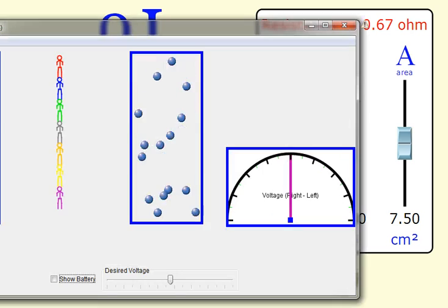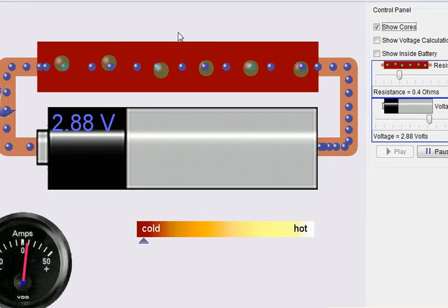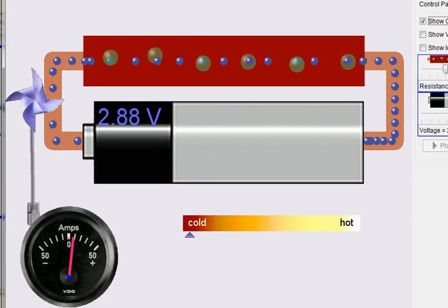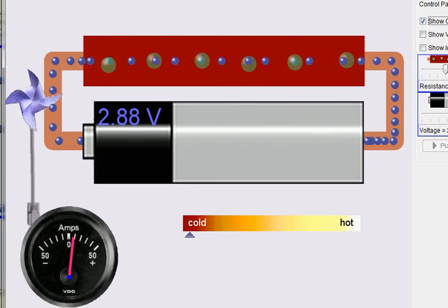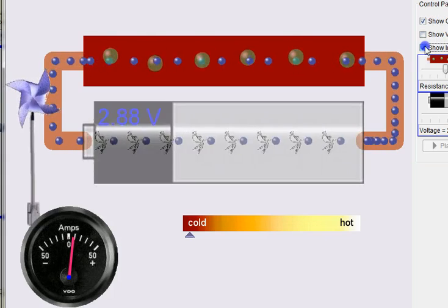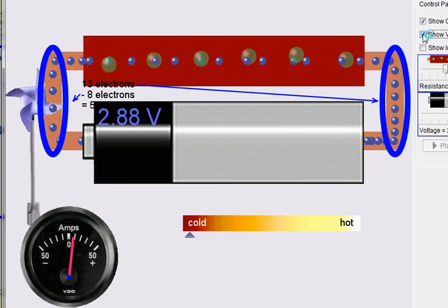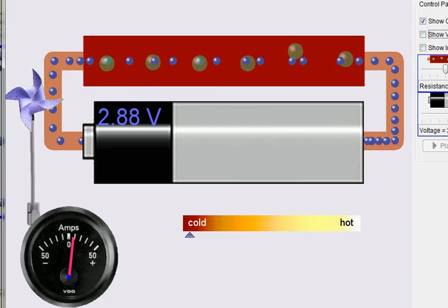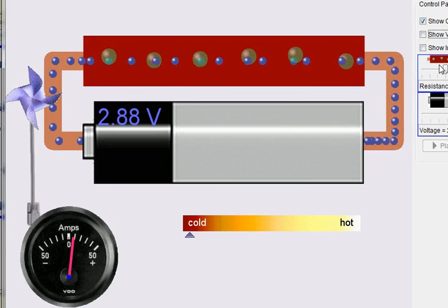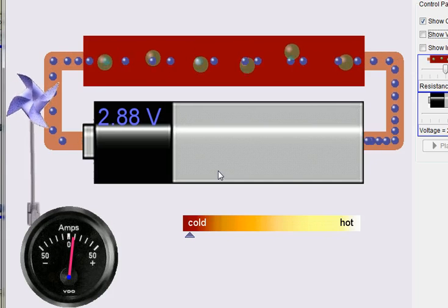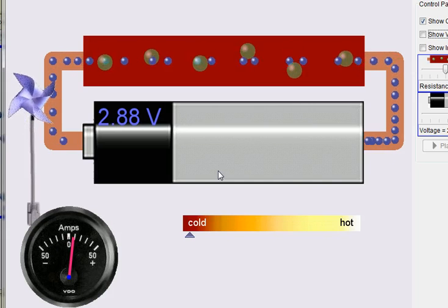And then finally, our third one is the battery resistor circuit. And you can try to describe what's going on in this. And you can look inside. You can show how voltage is calculated. And you can play with some slider bars here. So for each of these, I'd like you to write about a three to four sentence paragraph describing what's going on.